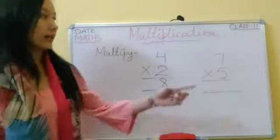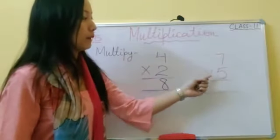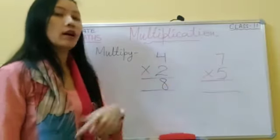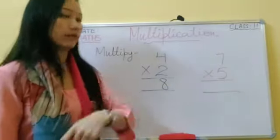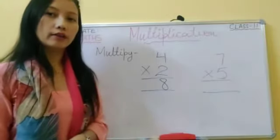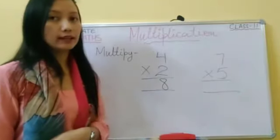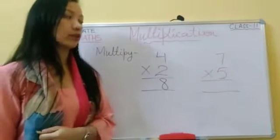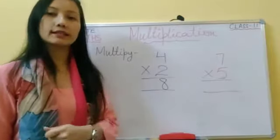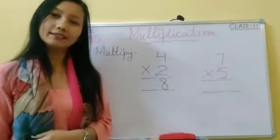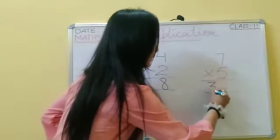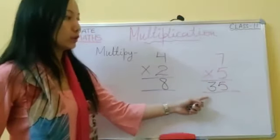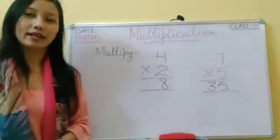Now the next one: seven multiply by five. Let's recite the table of five up to seven: five ones are five, five twos are ten, five threes are fifteen, five fours are twenty, five fives are twenty-five, five sixes are thirty, five sevens are thirty-five. Seven multiply by five is equal to thirty-five.